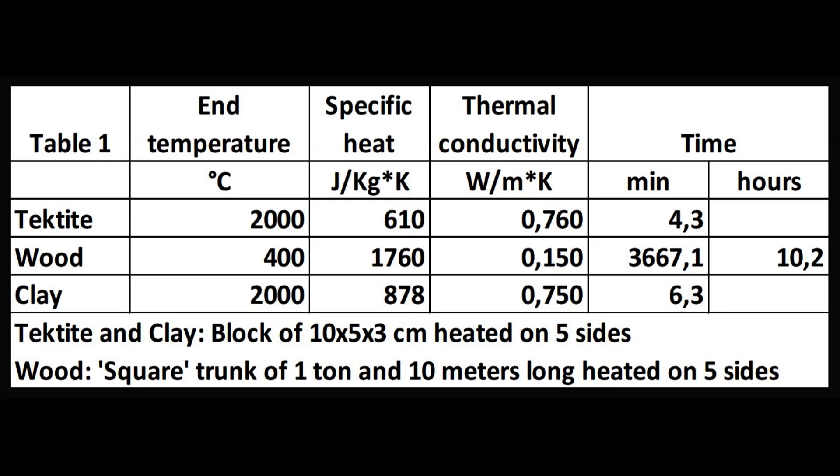The precursor is heated on 5 sides, and a tree trunk 10 meters long, measuring 30 by 30 centimeters, also heated on 5 sides. It would take about 10 hours to heat the trunk to 400 degrees Celsius, while the tektite precursor would heat to 2,000 degrees Celsius in just 7 minutes.